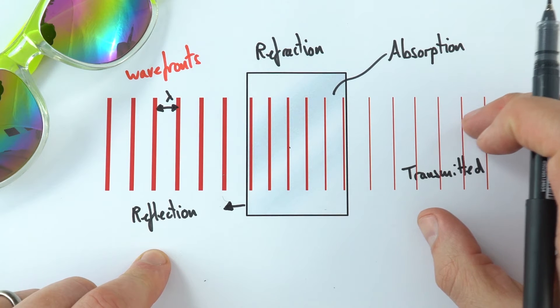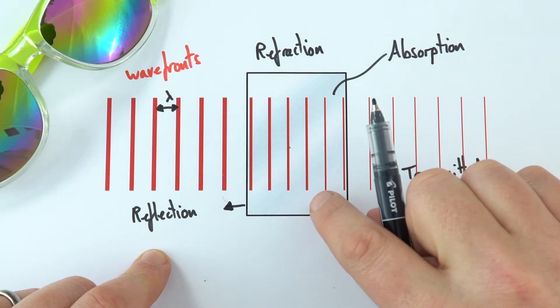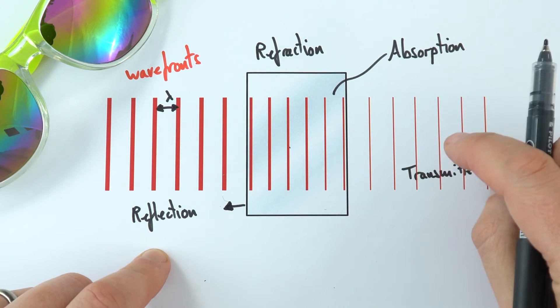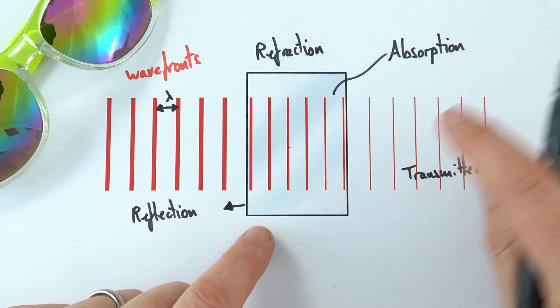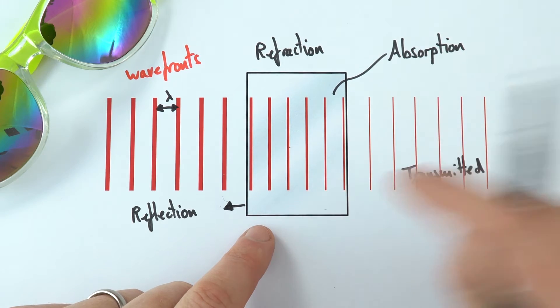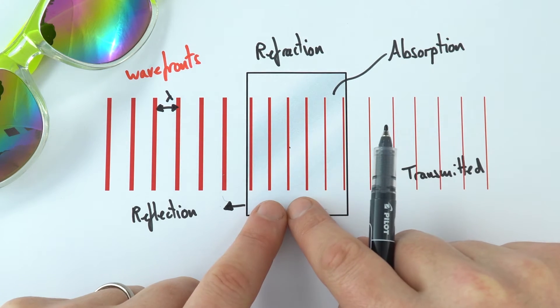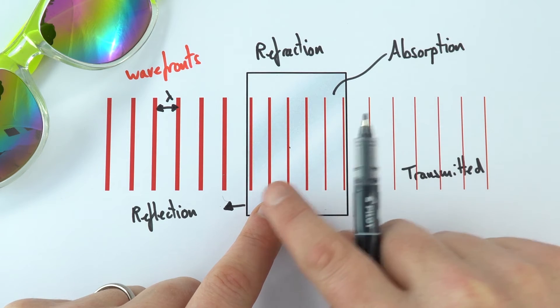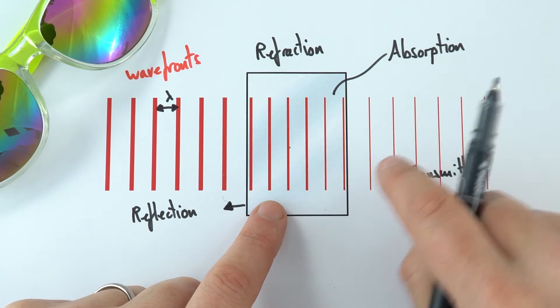We get the most transmission when we've got something which is transparent. If you've got something which is translucent, it starts to absorb some of that light. And if you've got something which is opaque, it doesn't let any of that wave get through at all and therefore nothing is transmitted.